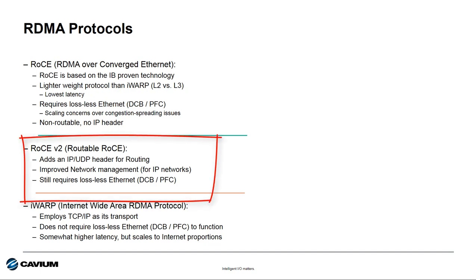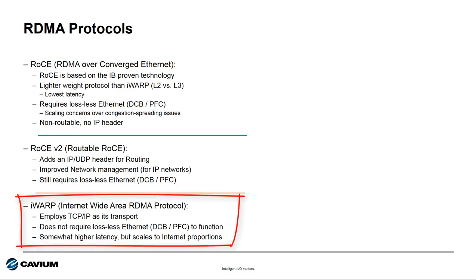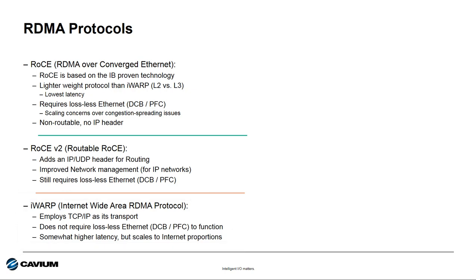RoCEv2, also known as Routable RoCE, adds IP/UDP headers to each of the packets, making them routable across subnets. But again, the scalability issues inherent to converged Ethernet still apply. iWARP is a third type of RDMA in use today and runs over standard Ethernet topology without requiring lossless connectivity, making it suitable for scaling environments. However, the latency is slightly higher than that of RoCE implementations as a result.